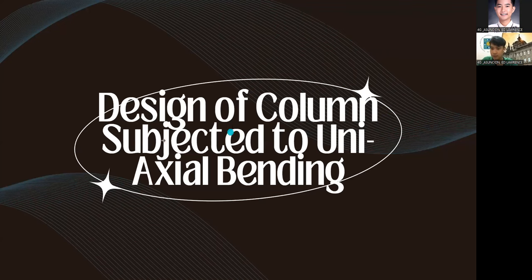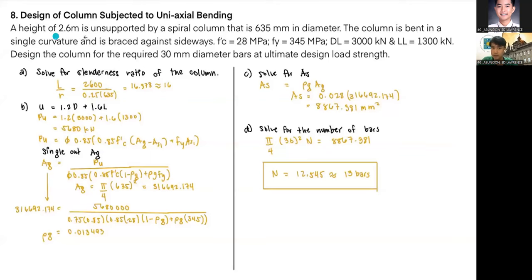Our next problem is design of columns subjected to uniaxial bending. A height of 2.6 meters is unsupported by a spiral column that's 625 millimeters in diameter. The column is bent in a single curvature and is braced against sideways. F'c equals 28 MPa, fy equals 485 MPa, dead load equals 3,000 kilonewtons, and live load is 1,300 kilonewtons. Design the column for the required 30 millimeter diameter bars to the ultimate design load strength.